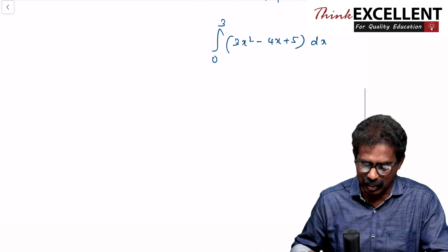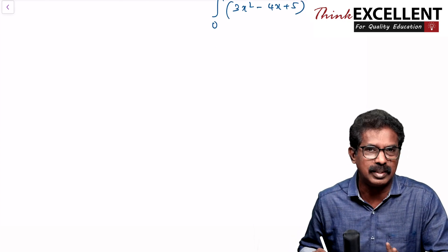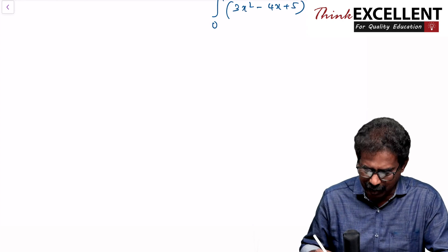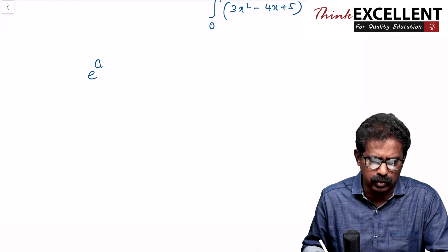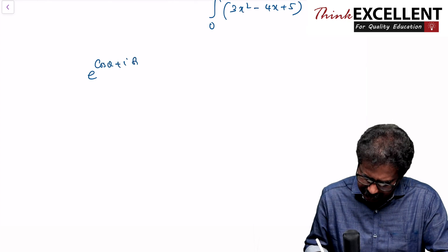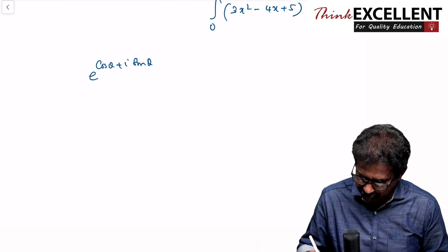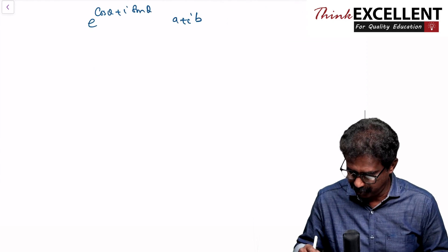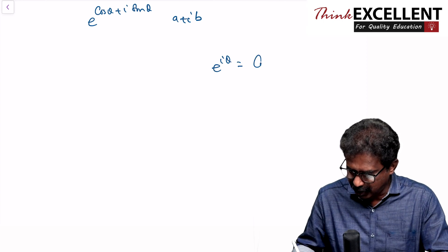In 2023, two mark complex number, one question, very easy. They find it difficult at the same time. e raised to cos theta plus i sin theta. This is the standard formula, so that is you have to write it in a plus ib form, a plus ib form you know. e raised to i theta.